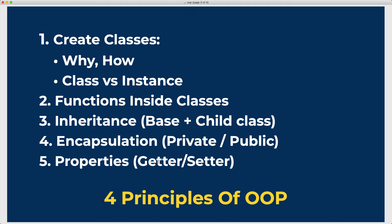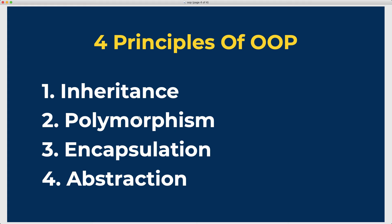Then we talk about encapsulation and properties, which shows a Pythonic way to use getters and setters. During all those sections, we also talk about the four principles of object oriented programming — a typical interview question for beginners. The four principles are: inheritance, polymorphism, encapsulation, and abstraction. We won't define them right away; instead we'll learn about them as I explain the concepts in code, so that by the end you'll have a good understanding of what they all mean.